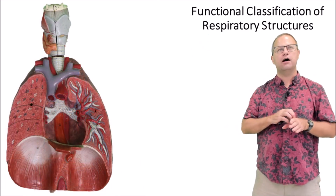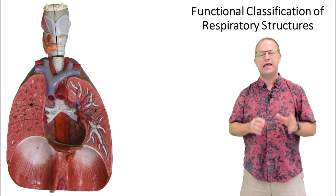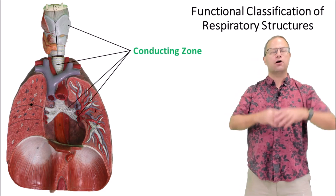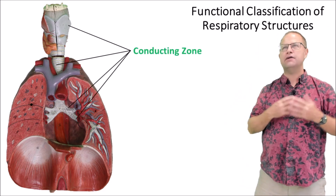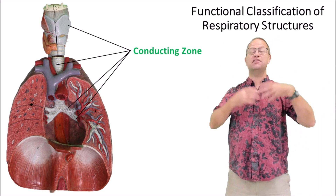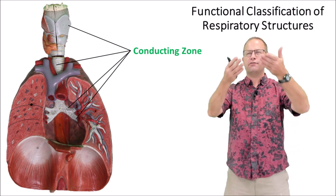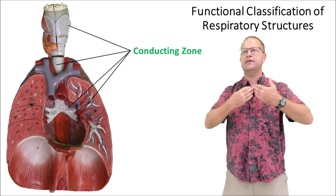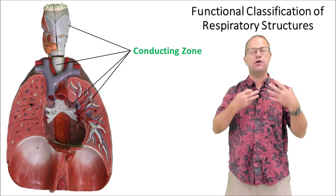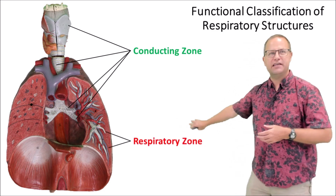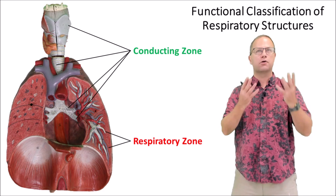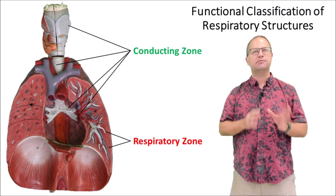You might also hear of a functional classification for the respiratory system, talking about the conducting zone and the respiratory zone. The conducting zone includes all the structures that help to get air down to the site where gas exchange takes place — from the nose, nasopharynx, to the larynx, trachea, primary and secondary bronchi. They conduct air but don't undergo any gas exchange. The respiratory zone is where gas exchange actually takes place: the alveoli, alveolar ducts, and respiratory bronchioles.